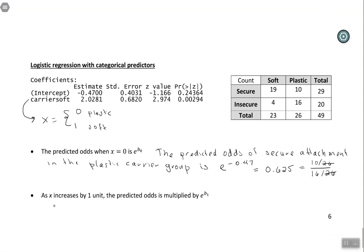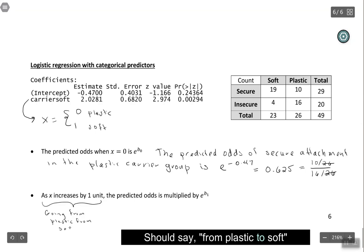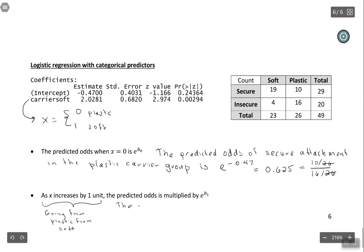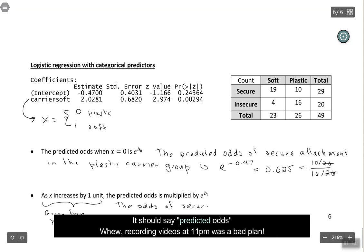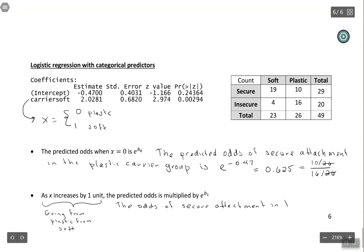What about the slope? So we say as x increases by 1 unit, the predicted odds are multiplied by e raised to the power of the slope. So what does it mean for x to increase by 1 unit here? Basically, if you're going from 0 to 1, in this context, that means that you're going from plastic to soft. So you're seeing how the odds are going to change as you go from plastic to soft. So we would say the odds of secure attachment in the soft group are e to the slope, so e to the 2.0281, that's 7.6 times as high. Remember, this is how we interpret an odds ratio. Times as high as the odds in the plastic group.